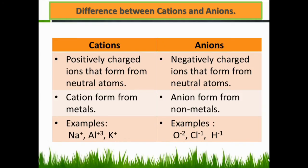Difference between cations and anions: cations are positively charged ions that form from neutral atoms; anions are negatively charged ions that form from neutral atoms. Cations form from metals; anions form from non-metals. Examples of cations: Na⁺ by losing one electron, Al³⁺ by losing three electrons, K⁺ by losing one electron. Examples of anions: O²⁻ by gaining two electrons, Cl⁻ by gaining one electron, H⁻ by gaining one electron.